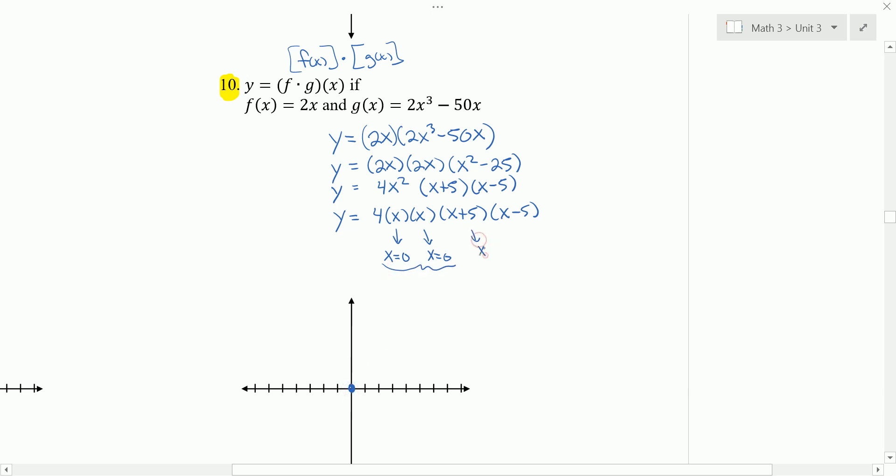This one, x plus 5. If we set that equal to 0, we get x equals negative 5. So that's a multiplicity of 1. It's going to pass through there. So we're going to bounce. Here we're going to pass through. And then we get x minus 5. If we set that equal to 0, we get x equals 5. And it's going to pass through that one.